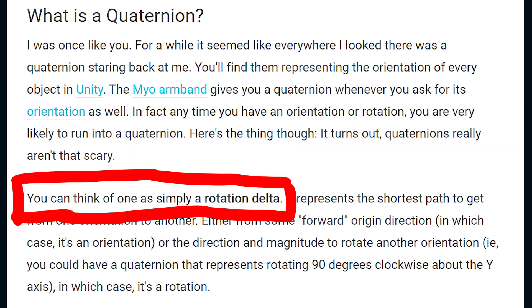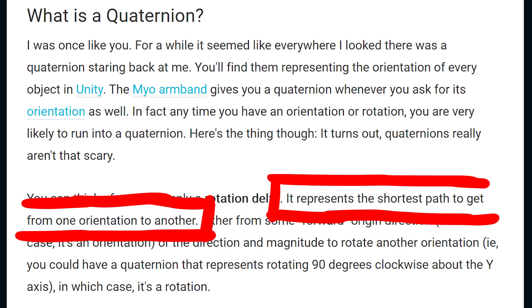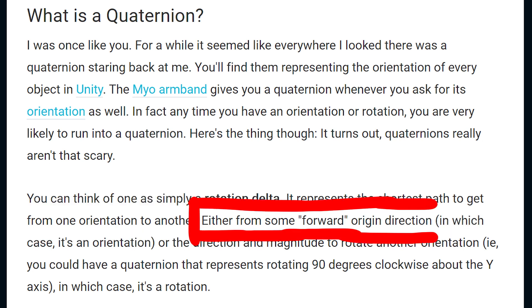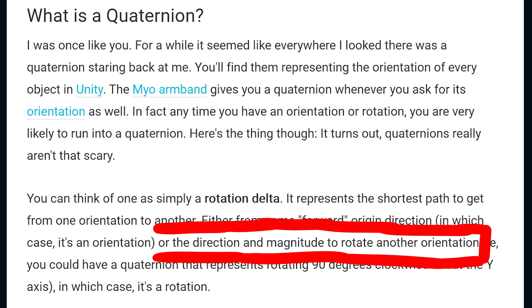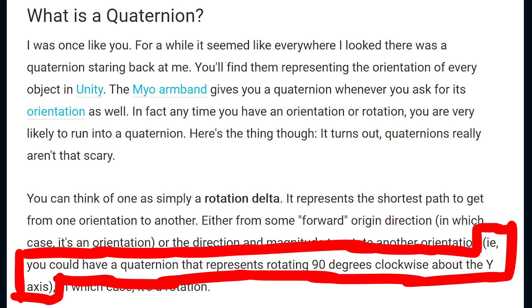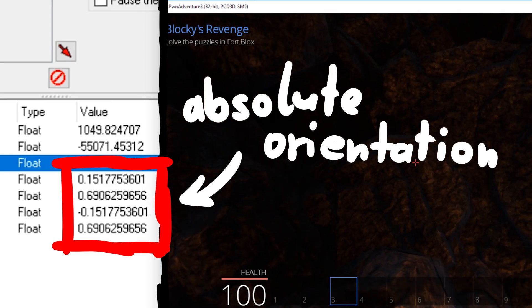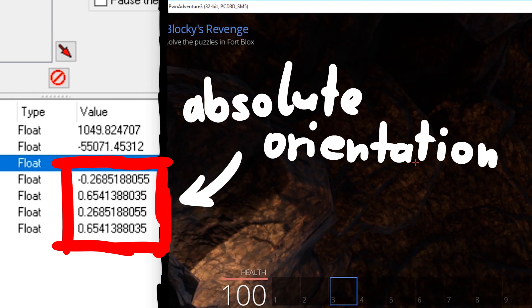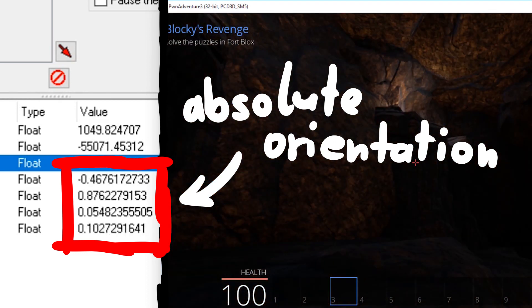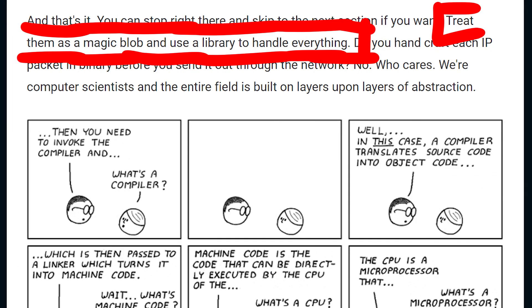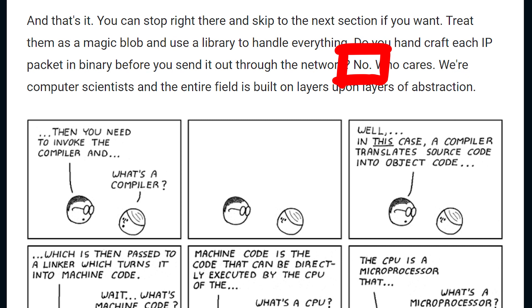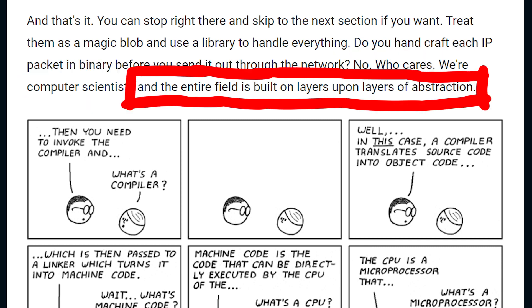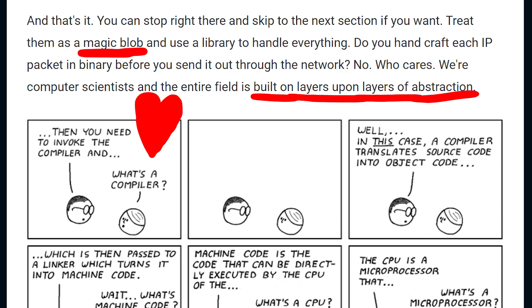You can think of one as simply a rotation delta. It represents the shortest path to get from one orientation to another. Either from some forward origin direction, in which case it's an orientation, or the direction and a magnitude to rotate another orientation. I.e. you could have a quaternion that represents rotating 90 degrees clockwise about the y-axis. In which case it's a rotation. So in our case it very likely is an absolute orientation, a direction of some forward origin. And the author of the blog says, treat them as magic blob and use a library to handle everything. Do you handcraft each IP packet in binary before you send it out through the network? No. Who cares. We are computer scientists. And the entire field is built upon layers upon layers of abstraction. And I just take this by heart now.